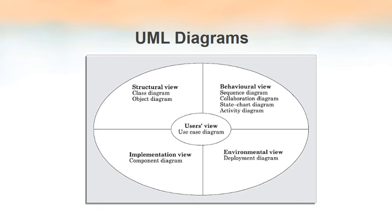The overall picture of UML diagrams places the users view at the center, meaning every other view — structural, behavioral, environmental, or implementation — depends upon the user's view, because it is the user to whom we deliver our software. Among the diagrams we can see are class diagram, object diagram, sequence diagram, collaboration diagram, and state chart diagram. Altogether there are nine UML diagrams.